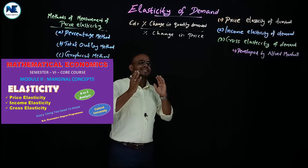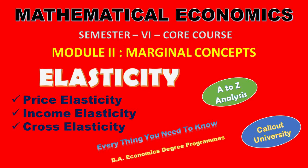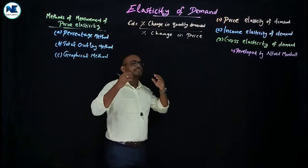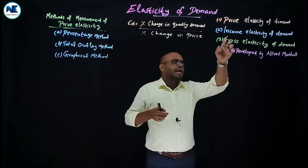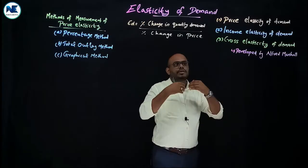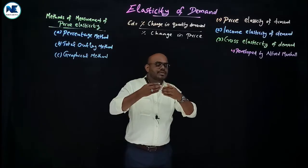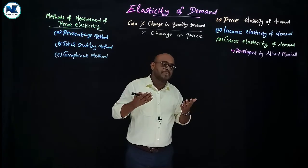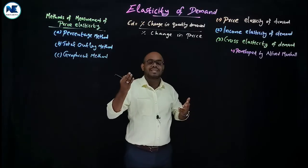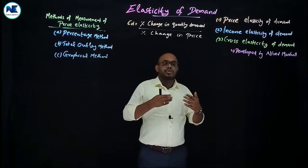Our topic is elasticity of demand, a very important topic. We have already discussed the law of demand, demand schedule, demand curve, and the downward sloping demand curve. The important types of elasticity of demand are: price elasticity of demand, income elasticity of demand, and cross elasticity of demand. The degrees or types of price elasticity include perfectly elastic demand, perfectly inelastic demand, unitary elastic demand, relatively more elastic demand, and relatively less elastic demand.